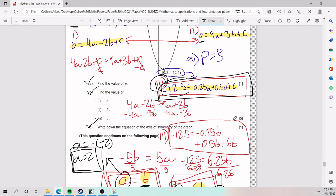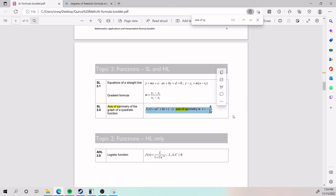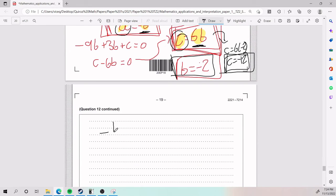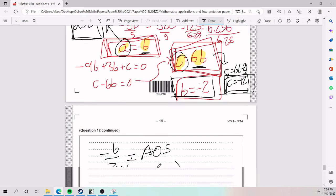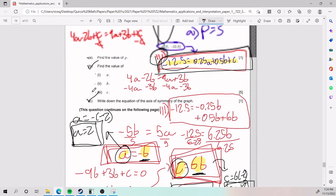For part c, we need to write down the equation of axis of symmetry of the graph and there is actually an equation for that. It is in our formula booklet. And so if I go ahead and look it up in the formula booklet, we can see that it's negative b over 2a. So negative b over 2a is going to equal my axis of symmetry. So negative b we said was 2. All of it is divided by 2a which we said was 2. So 2 times 2. So we have 2 divided by 4, 1 half. So that is my axis of symmetry. That is part c.